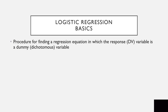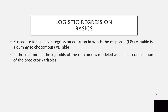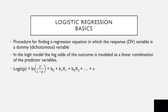A logistic regression is a procedure for finding a regression equation in which the response — the dependent variable — is a dummy dichotomous variable. In the logit model, the log odds of the outcome is modeled as a linear combination of the predictor variables. The logit of the probability is the natural log of the odds, where beta naught, beta 1x, and so on through to error.